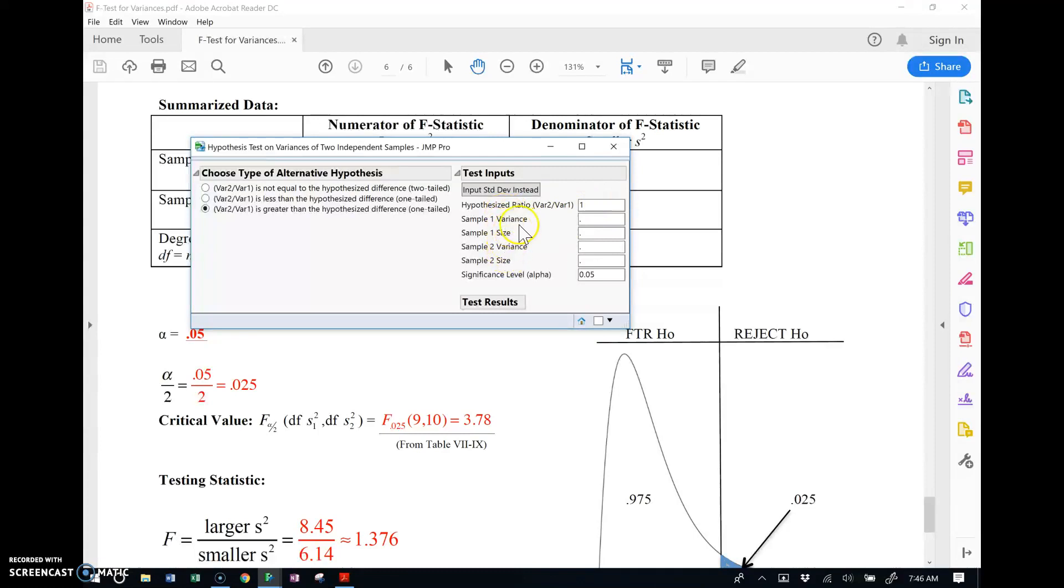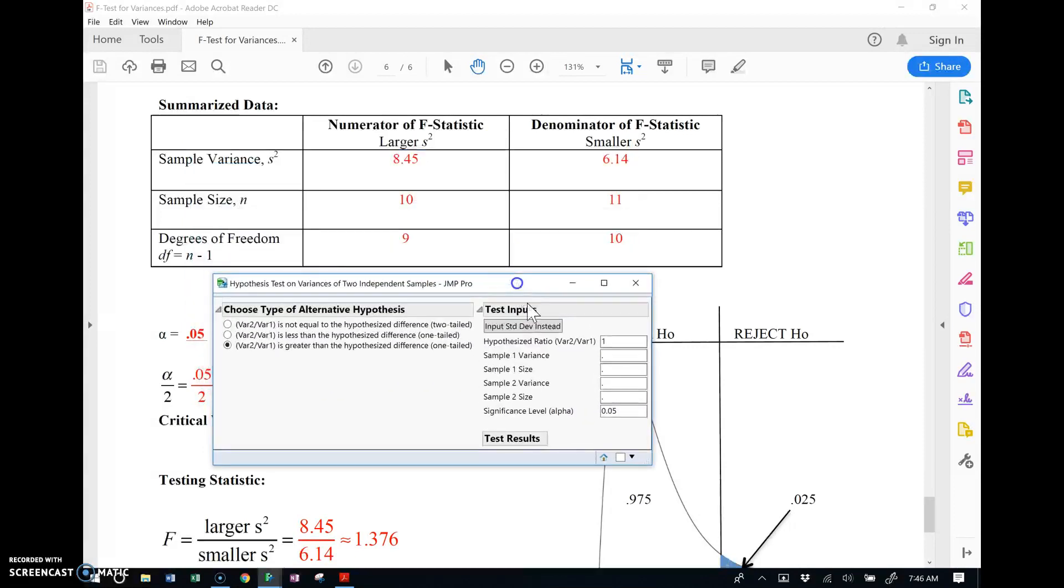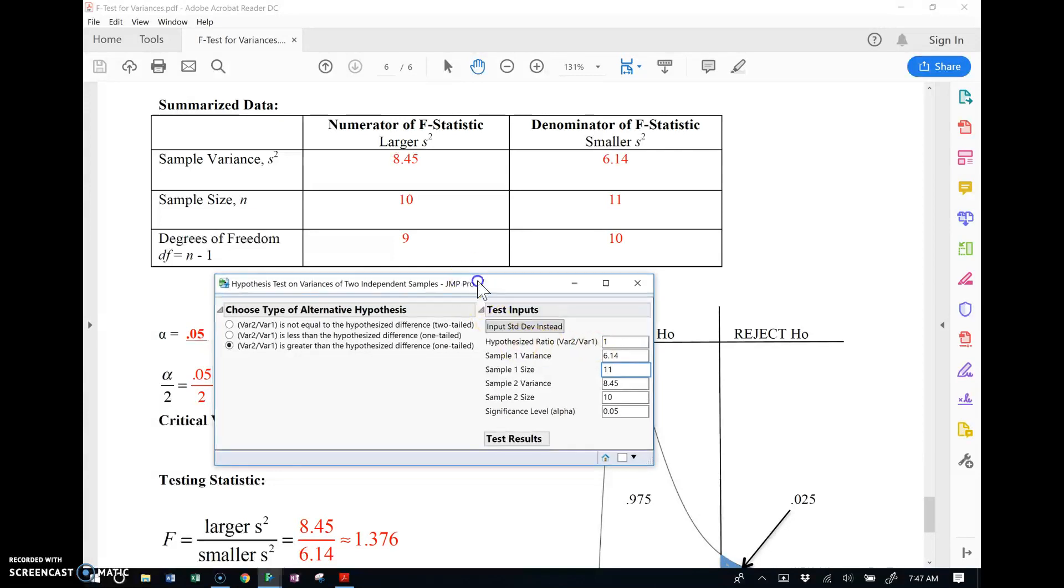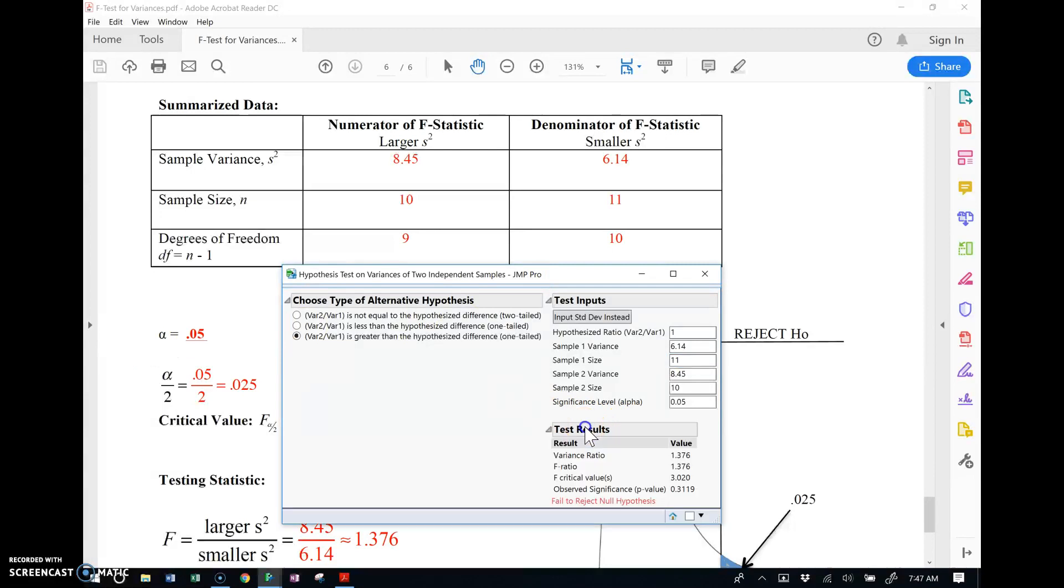Now look at this. It's asking you for the variances in the summary statistics. What's kind of nice is if the question gives you standard deviation instead, you can click this button and it'll switch the inputs. Alright, let's just give this what it needs. So it's pretty straightforward here. Look at the order of the ratio, by the way. Variance two divided by variance one. So the variance we put on top, remember, has to be the larger variance. So variance two will be the larger variance, so in this case that's 8.45. So 8.45. And that sample size was 10. And then this is 6.14. And that sample size is 11. And then the alpha level is 5%. Alright, so let's see the results.